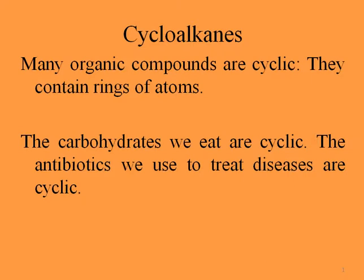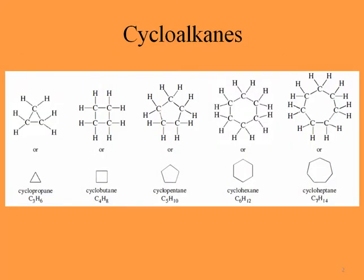I've put some cycloalkanes here: cyclopropane contains three carbon atoms, cyclobutane contains four, cyclopentane contains five, cyclohexane contains six, and cycloheptane contains seven carbon atoms. The number of hydrogen atoms is two times the number of carbon atoms, so the formulas follow CnH2n — for example C3H6, C4H8, C5H10, C6H12, and C7H14.